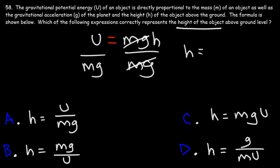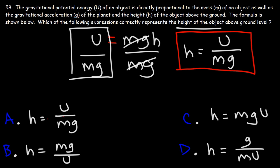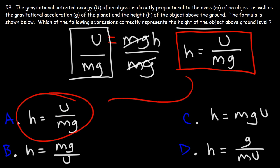So h is going to equal what we see on the left — the gravitational potential energy U divided by the mass and divided by the gravitational acceleration of the planet. This represents the height of the object, which means answer choice A is the correct answer.